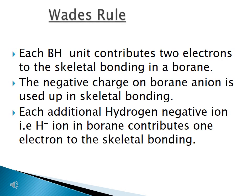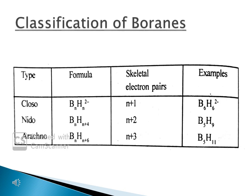Let us now concentrate on Wade's rule. The first rule is: each BH unit contributes two electrons to the skeletal bonding in a borane. The second rule is: the negative charge on a borane anion is used up in skeletal bonding. The third rule is: each additional hydrogen ion, that is H⁻ in borane, contributes one electron to the skeletal bonding. On the basis of these rules, boranes are classified into three types: closo boranes, nido boranes, and arachno boranes.